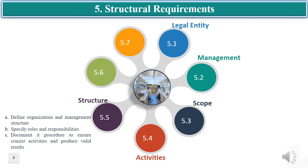Clause 5.5 explains the requirements on organizational structure, roles and responsibilities, and range of documented procedures. The laboratory shall define its organizational structure, depicting the relationship between various position holders. If it is part of a bigger organization, its place in the parent organization shall be clarified. The laboratory shall also define roles, responsibilities, and authorities of personnel whose activities directly or indirectly affect the validity of results. This standard does not prescribe any specific list of documents to be maintained; it is left to the discretion of the laboratory, considering the potential risk to operational consistency and validity of results.